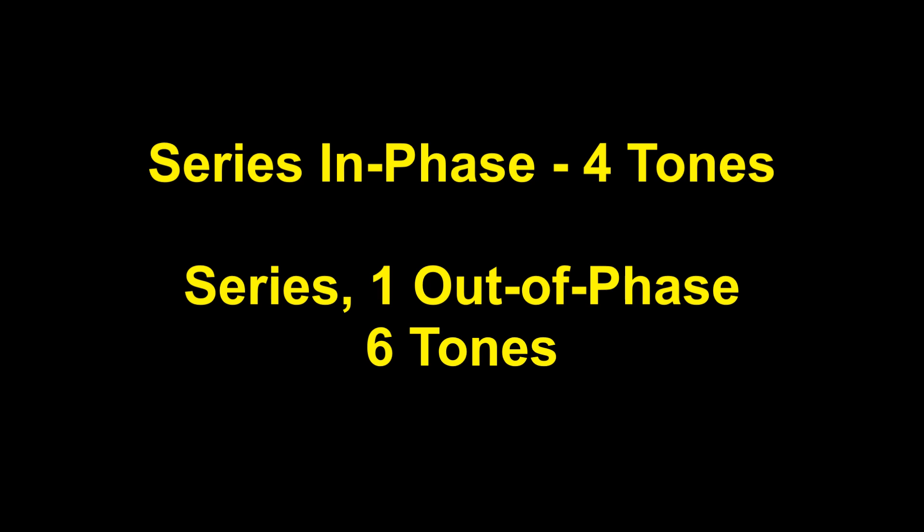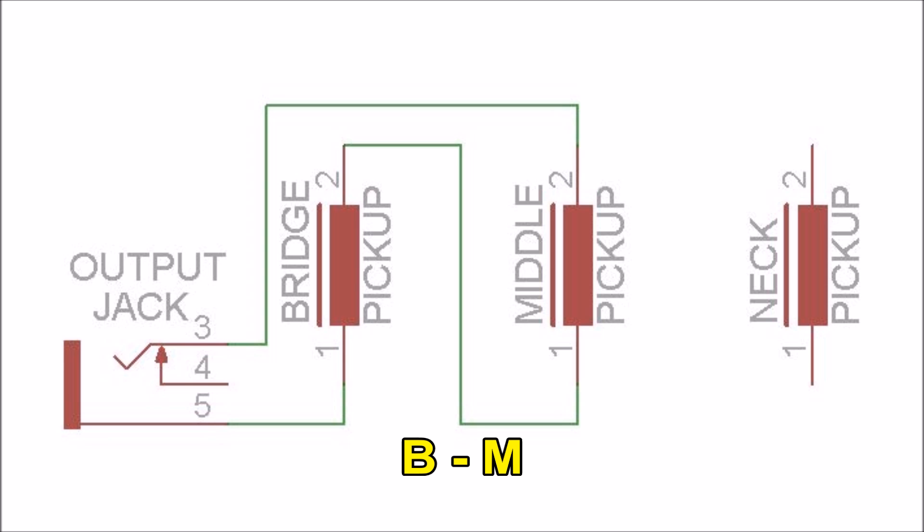Series, 1 out of phase: 6 tones. These tones also produce humbucking phase cancelling tones similar to the regular double coil humbuckers, but with the peculiarity of the Stratocaster twang, because of the spacing of the pickups and the differences in the coil windings of each of the pickups, with the bridge pickup usually having more windings and the neck pickup having the least.